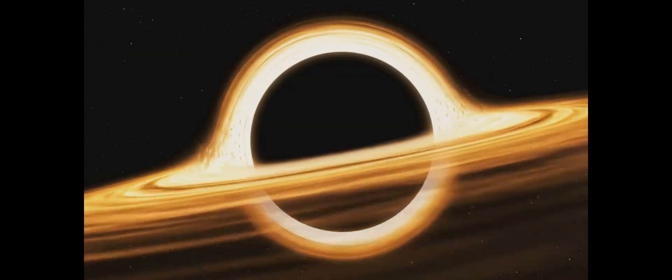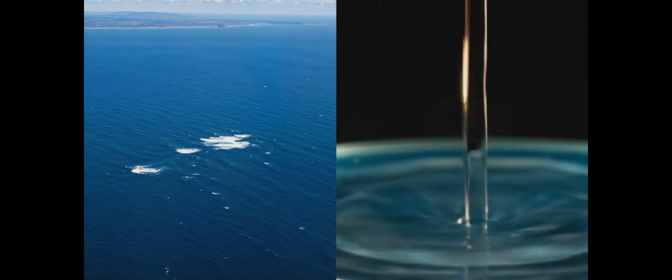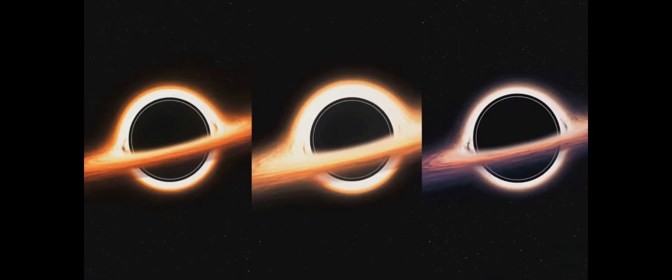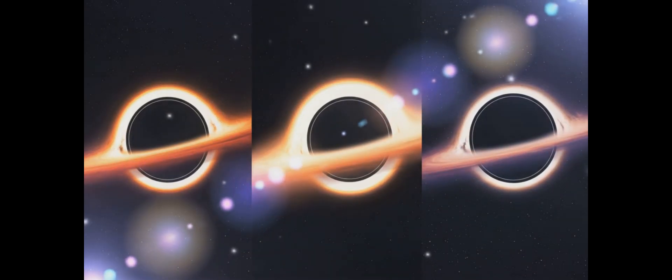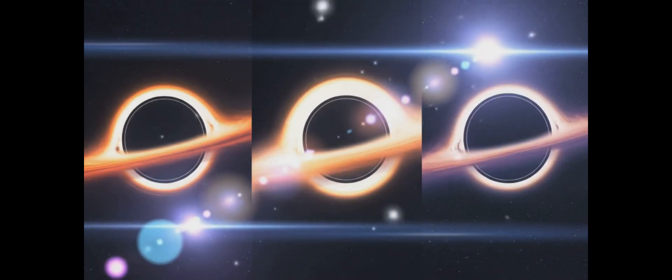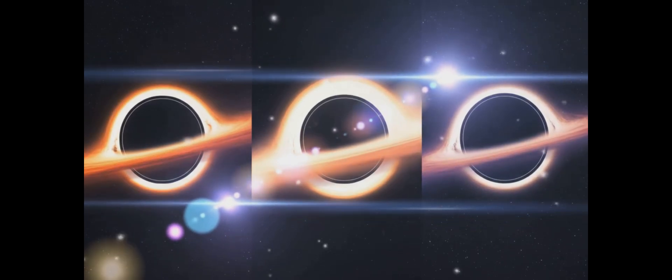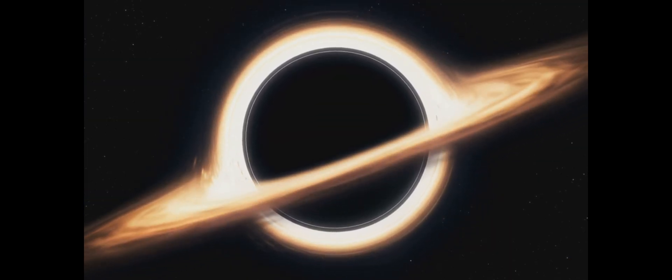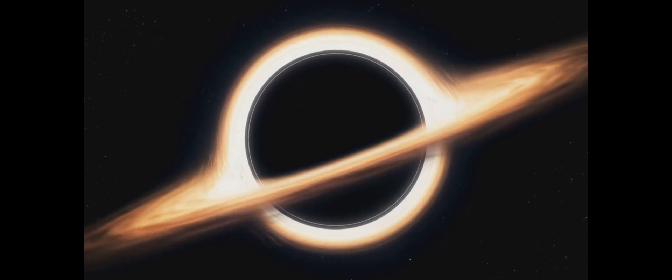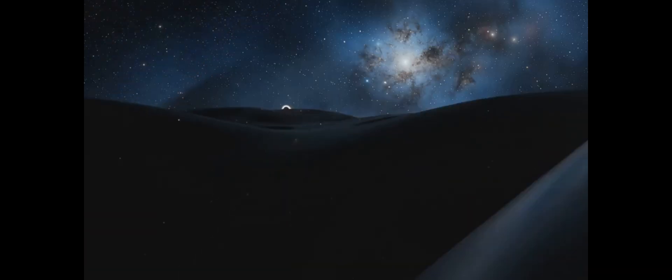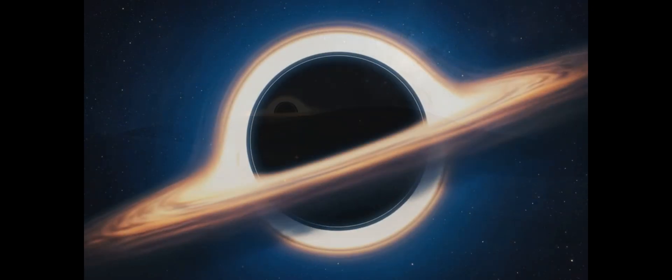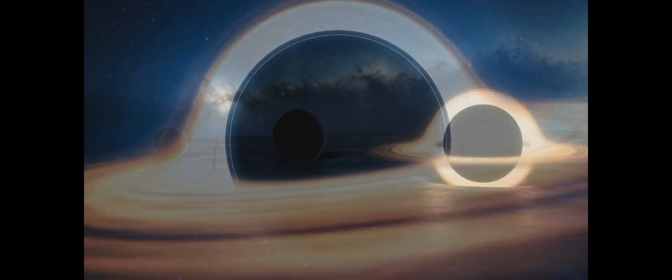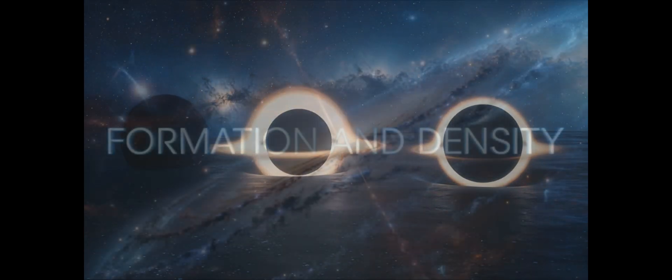It's as if you took all the water in the world's oceans and squeezed it into a single raindrop. That's the kind of density we're talking about. These cosmic behemoths come in various sizes, from stellar-mass black holes to the supermassive monsters lurking at the hearts of galaxies. But regardless of their size, they all share one fundamental characteristic: a gravitational field so intense that it warps the very fabric of space-time around it. Imagine the universe as a vast cosmic trampoline and black holes as incredibly heavy bowling balls distorting its surface.